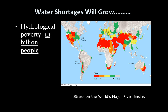Hydrological poverty is a term we use for anybody living in an area where they either don't have access to water or don't have access to clean water. Both of those situations can apply, and that affects over one billion people on the planet.